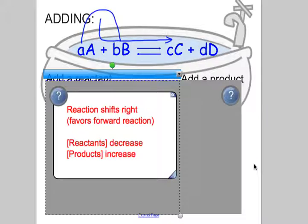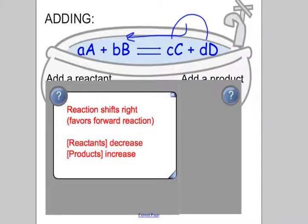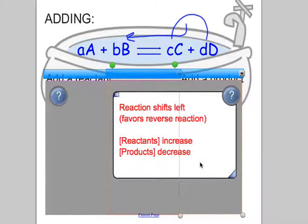You're always shifting over this arrow. So whether I add A or I add B, I shift to the right. What if, in that same bathtub, instead of adding water to the reactant side, I added water to the product side? It would shift to the left, favoring the reverse reaction — increasing the concentration of your reactants and decreasing the concentration of your products.